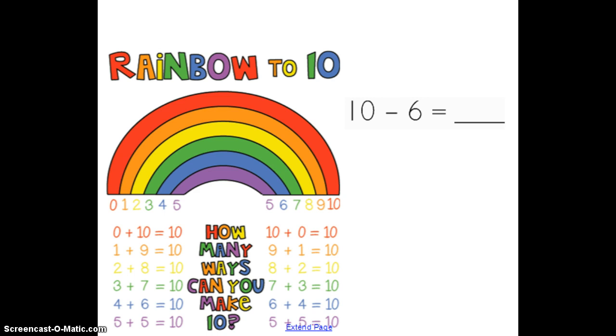In order to have this way of thinking help us solve these subtraction number sentences, we have to think about related facts. Remember related facts, we are going to use the same numbers. So again, if I am trying to solve 10 minus 6, my brain needs to think of a related addition number sentence that can help me easily find the difference. So remember, if it has to be related, that means it must have a 6 and it must have a 10.